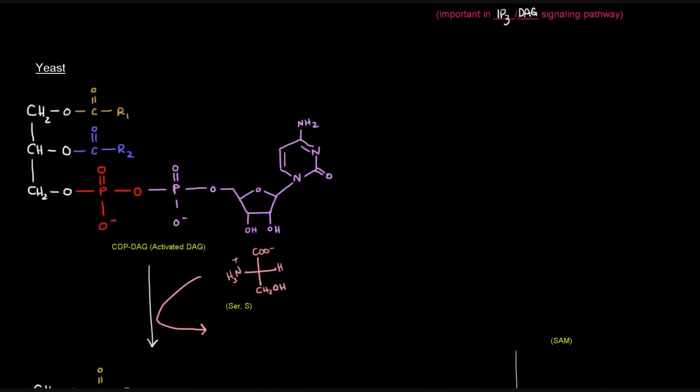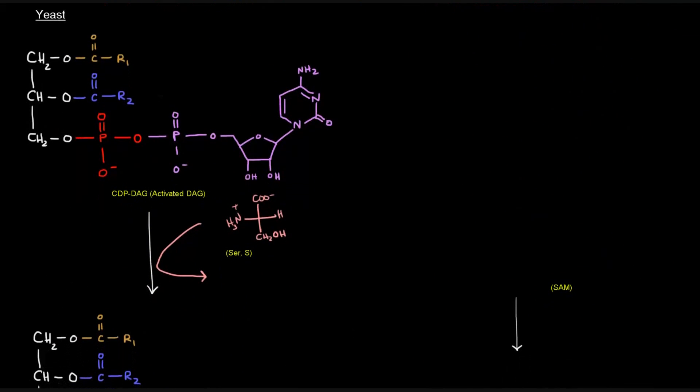Now, we've got specific organisms that we're going to use as examples here. Yeast is a eukaryote. And we're going to see a specific example of how we might make a glycerophospholipid in yeast. So, we can start with CDPDAG, just like before. And we can add our alcohol serine, specifically alcohol group serine.